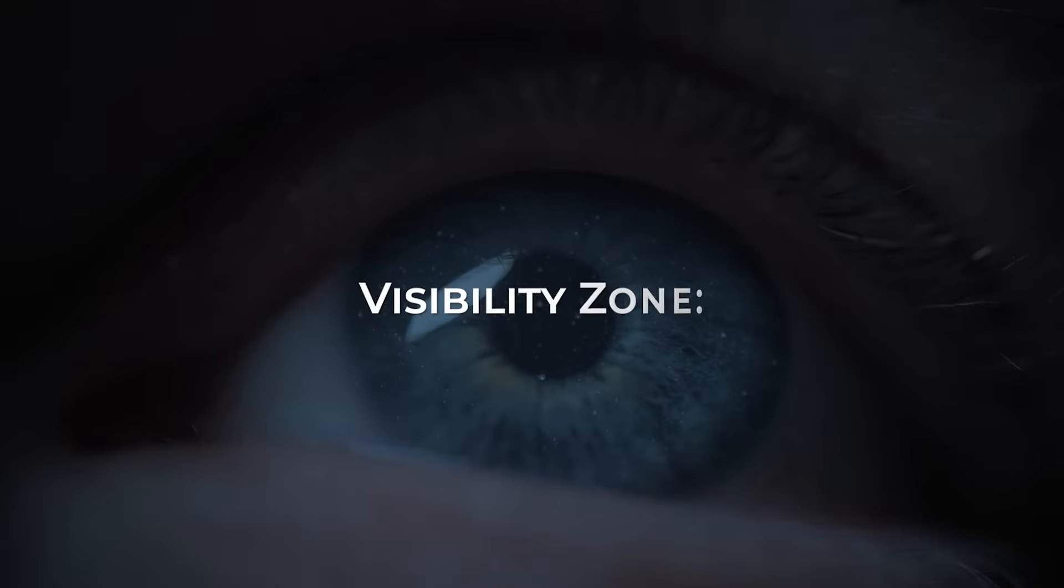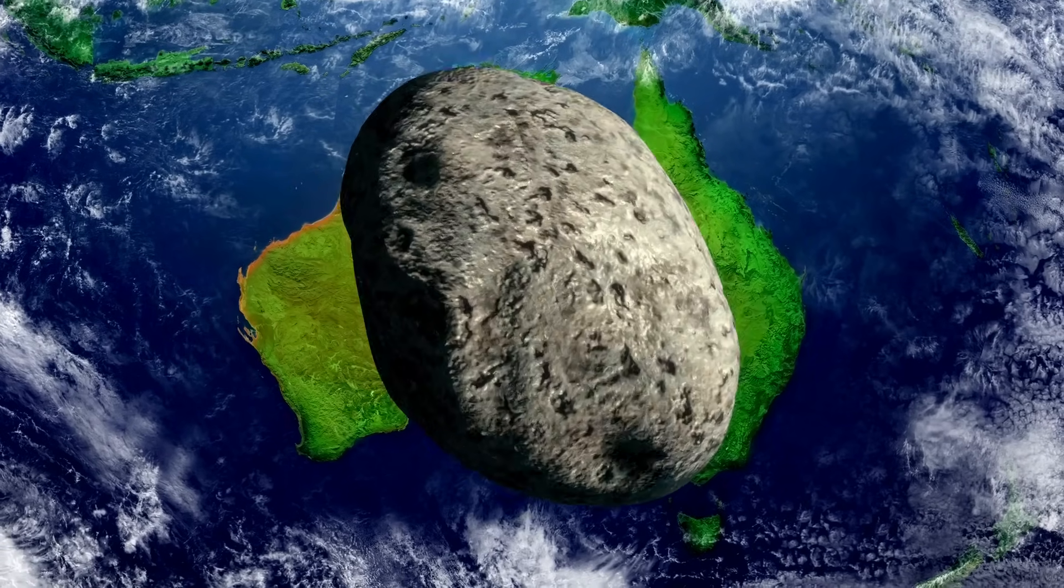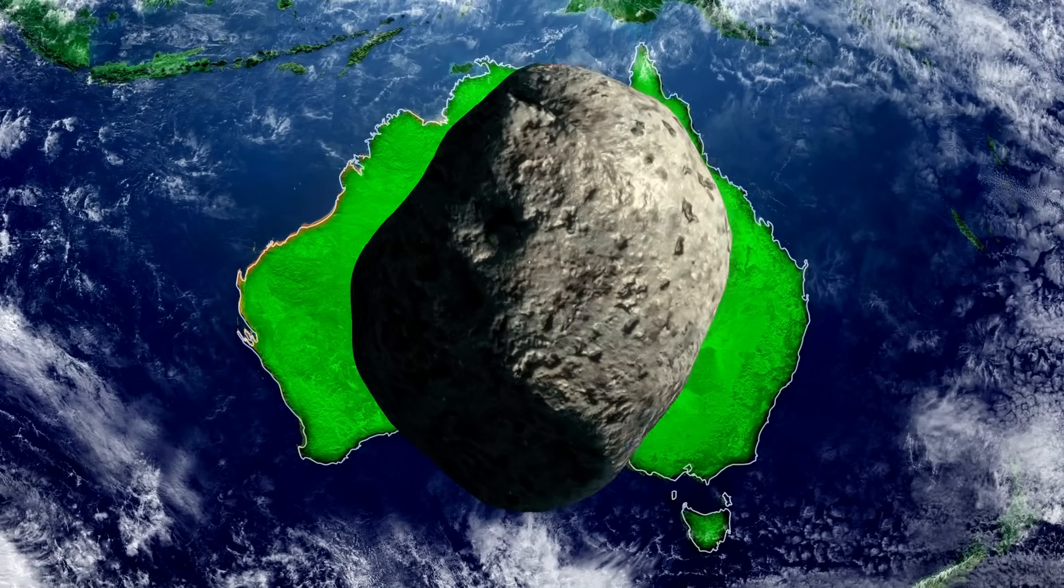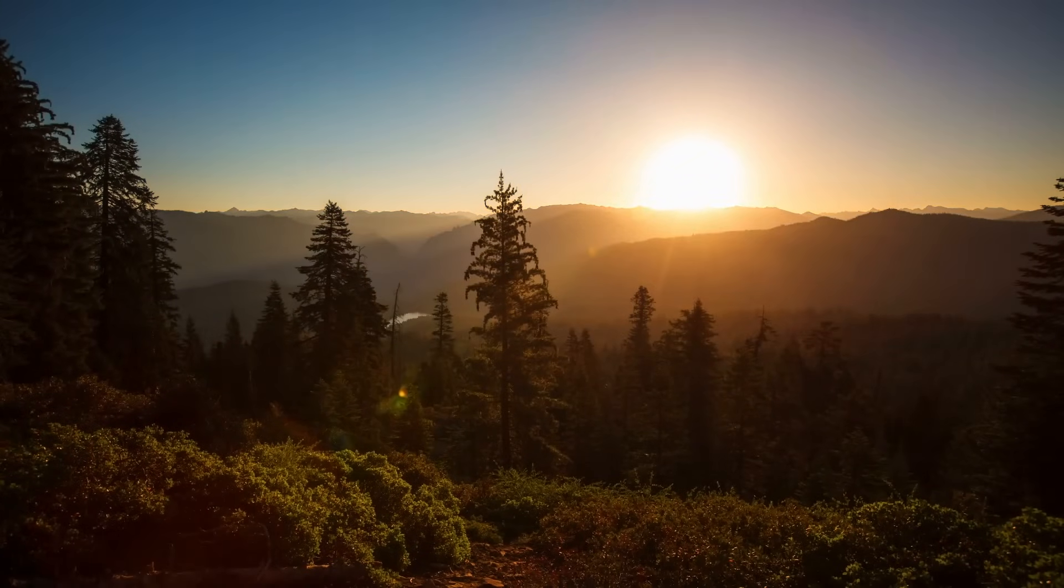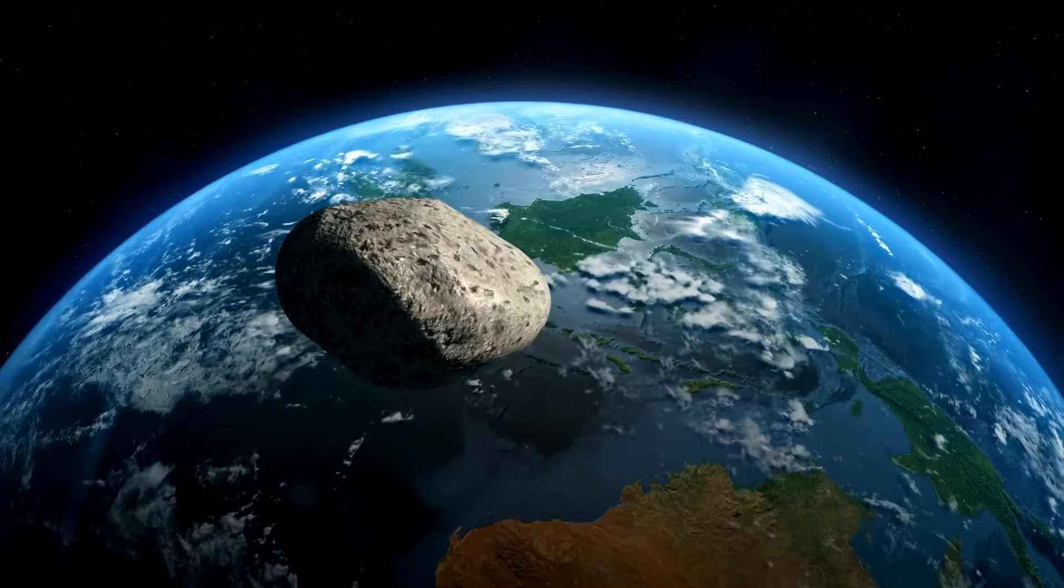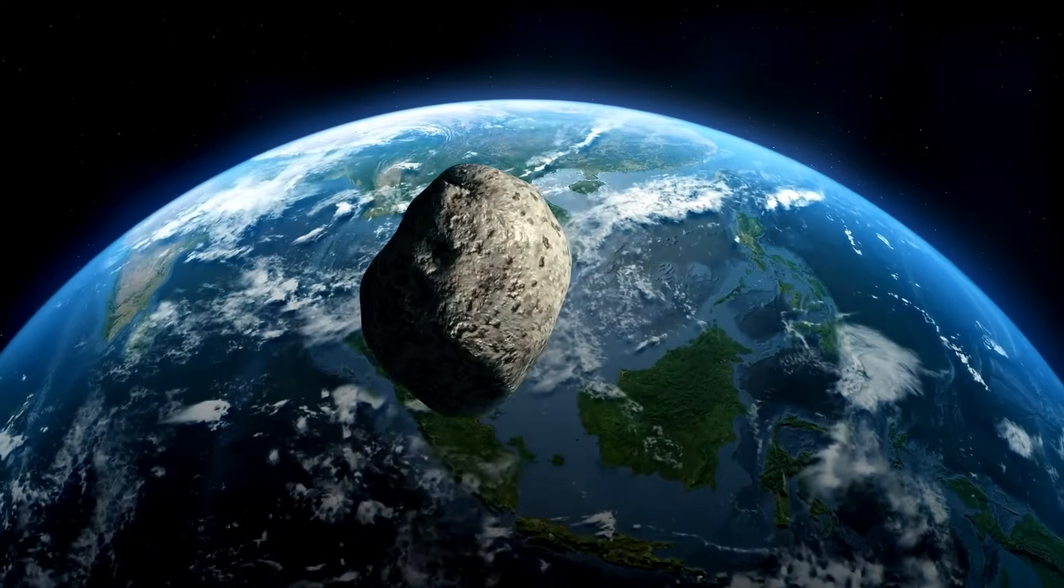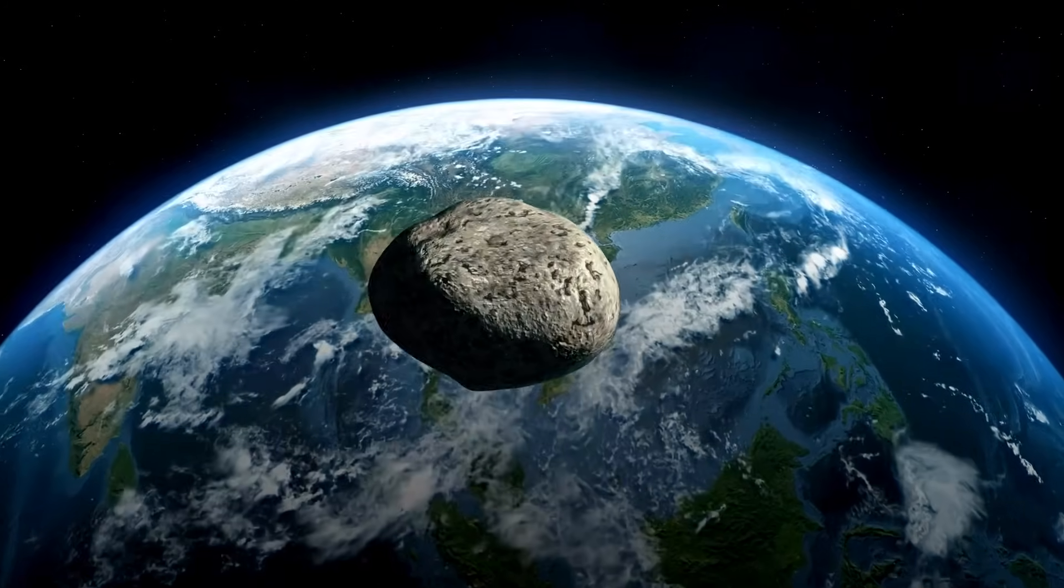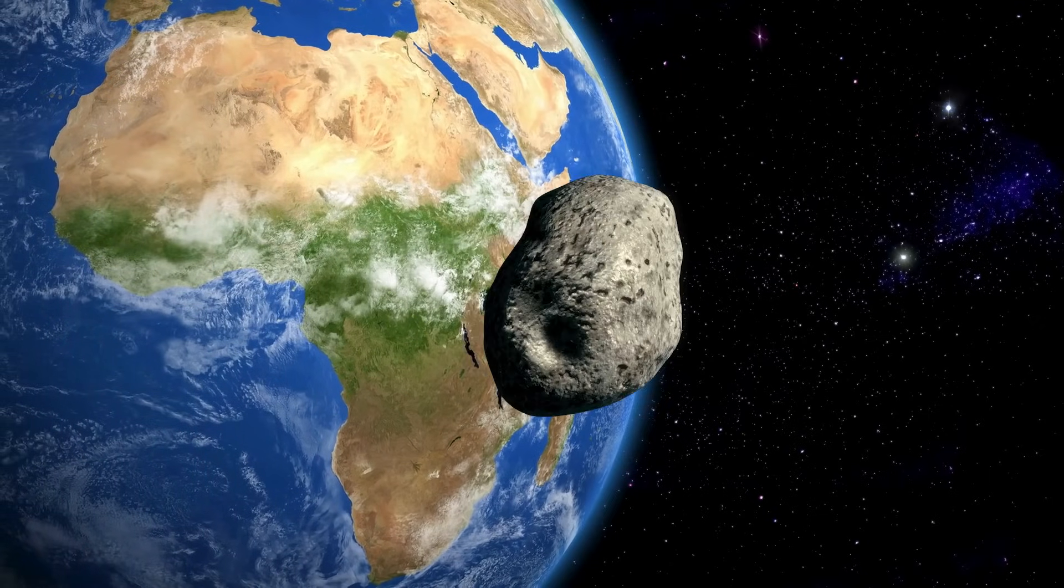Initially, Apophis will become visible to the naked eye in the night sky of the southern hemisphere, soaring over Earth from the east coast to the west coast of Australia. When Apophis is above Australia, it will be around mid-morning on the east coast of the United States. Continuing its journey, the asteroid will then traverse the Indian Ocean and, by the afternoon in the eastern US, it will have crossed the equator, still moving westward over Africa.